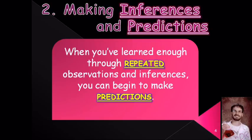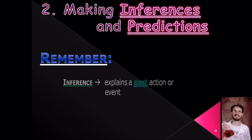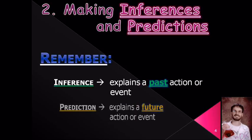On the other hand, predictions are things that, once you have enough experience, you can use to predict the future. If you went to see a third house, you could predict — after the first two both smelled like chocolate chip cookies — that the third house would also smell like chocolate chip cookies. Keep them straight: inferences are explanations of things that happened in the past; predictions are things that haven't happened yet or will happen in the future.